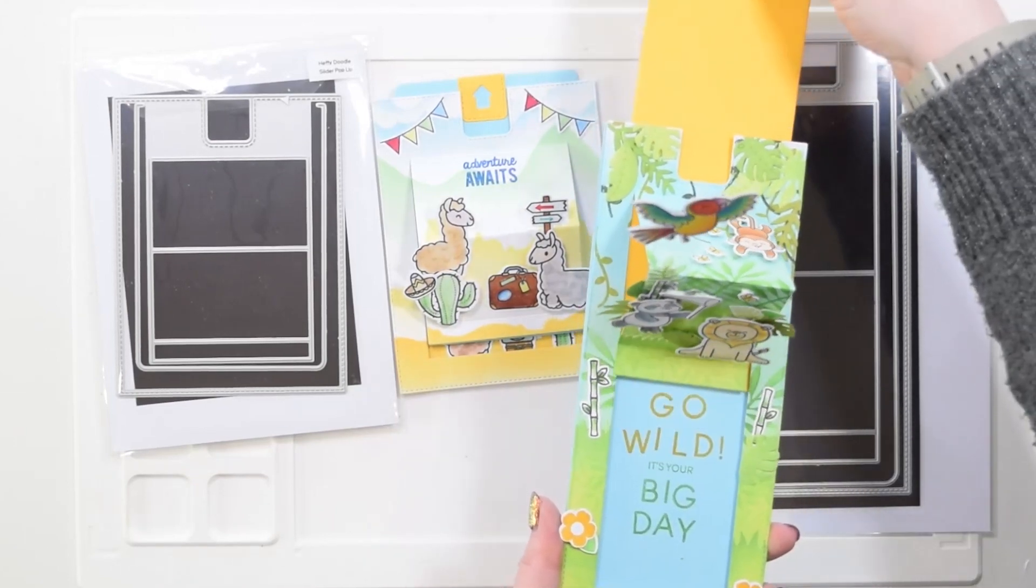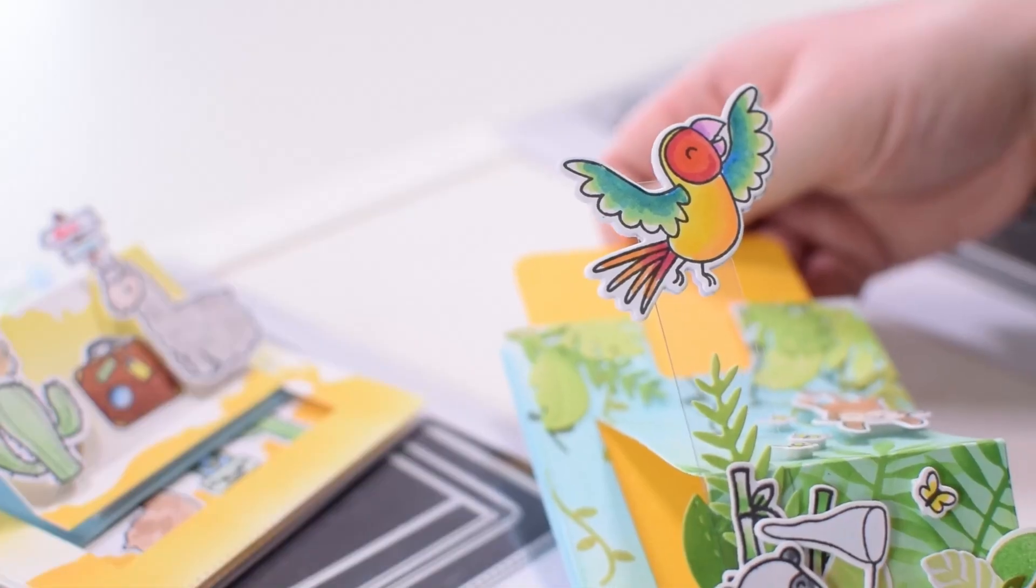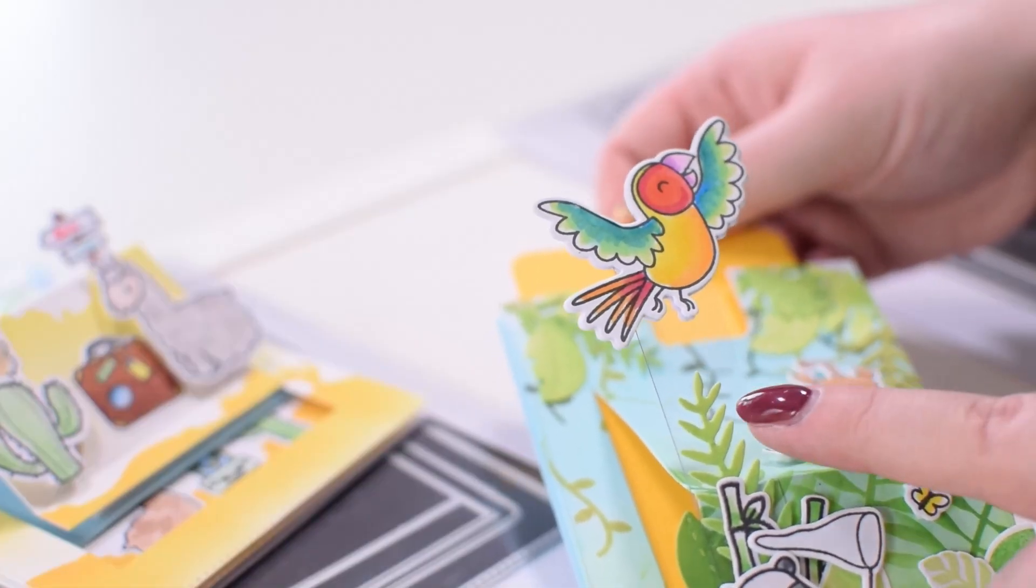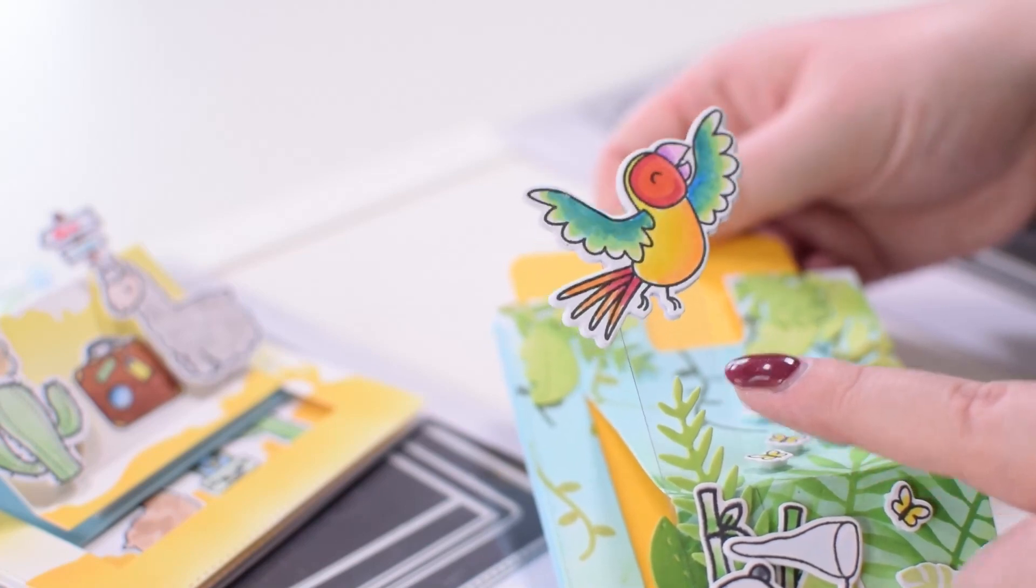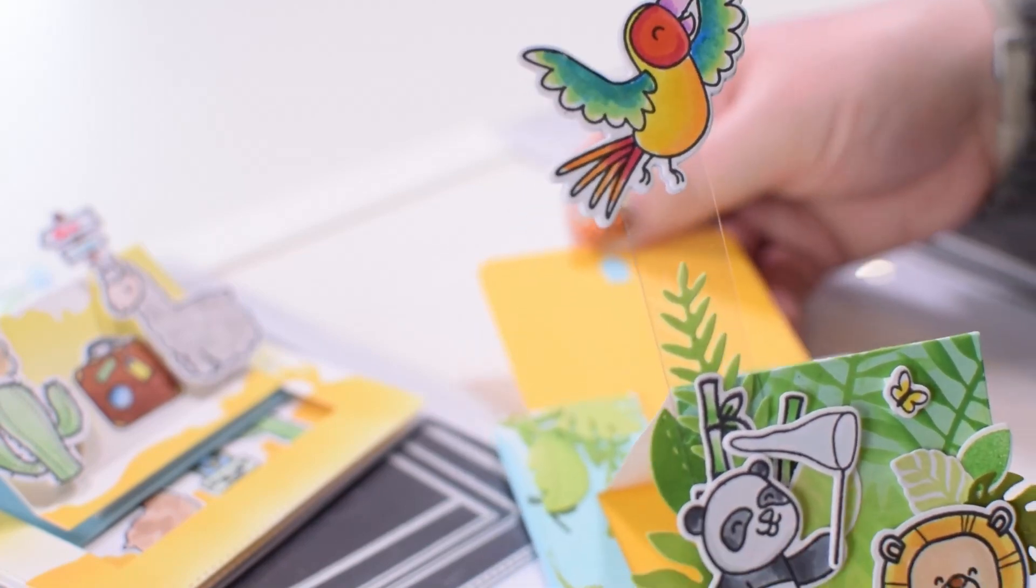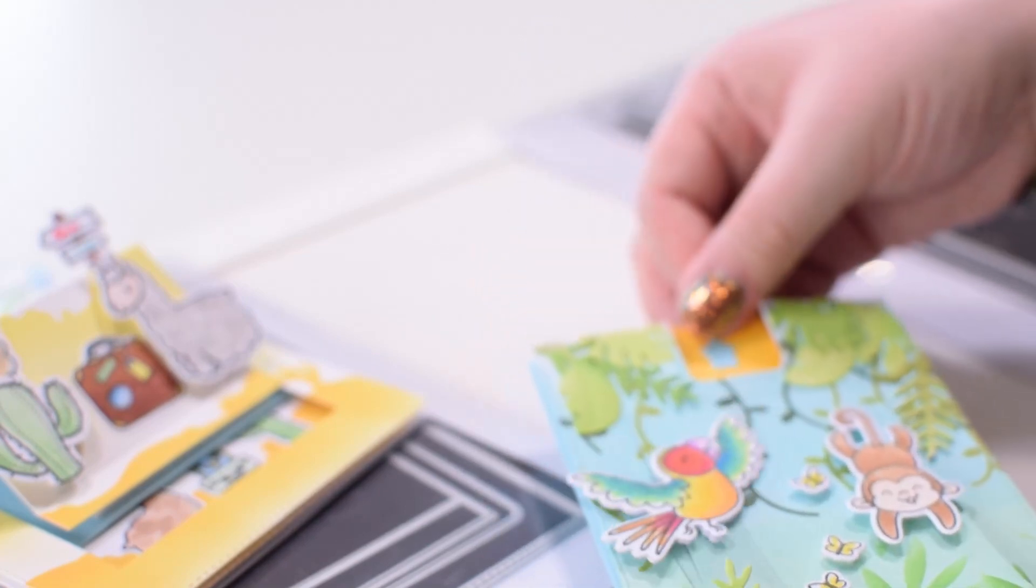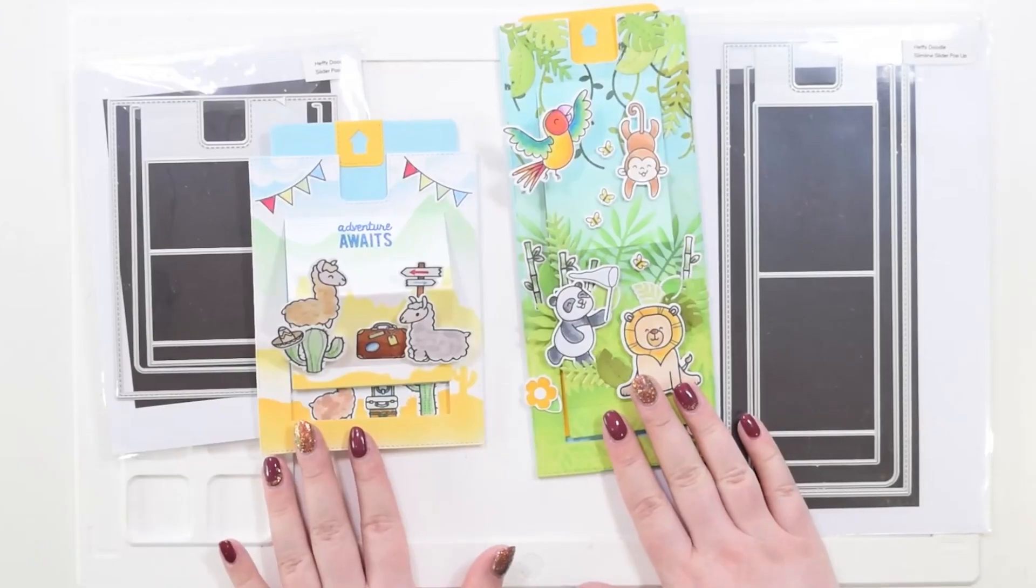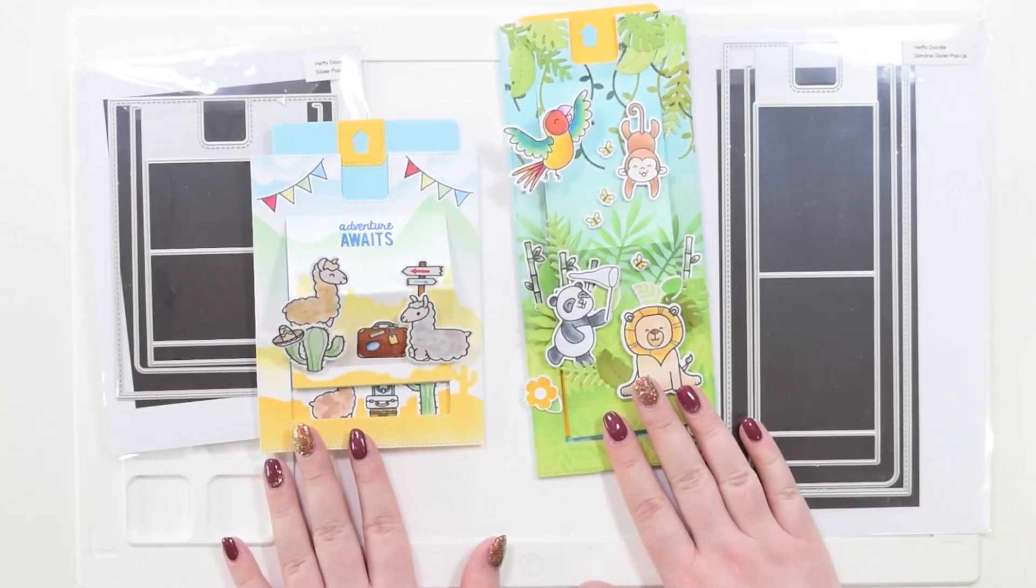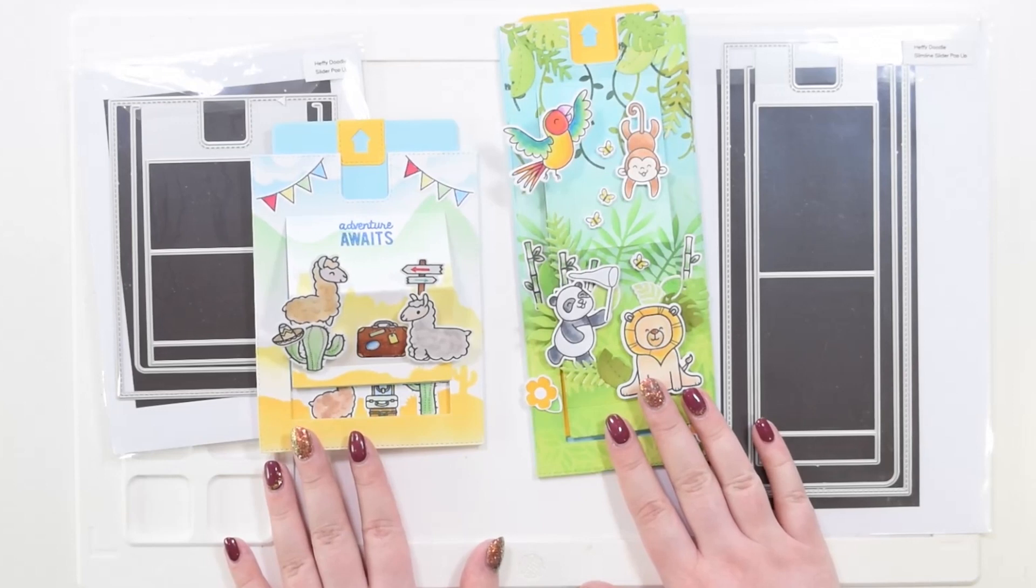These cards are great to add other fun features to, like this piece of acetate here to make it look like our parrot from Wingman is really flying. So this is your A2 and your slimline pop-up side by side.